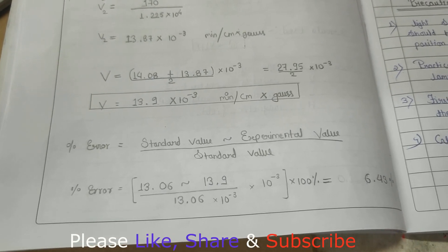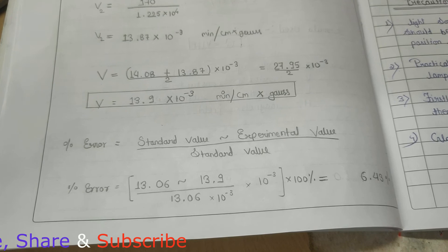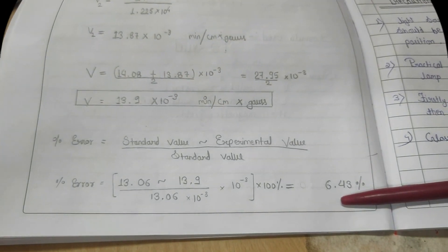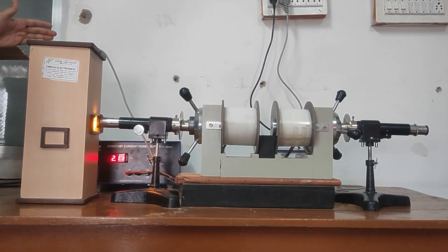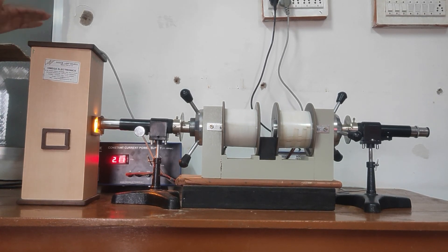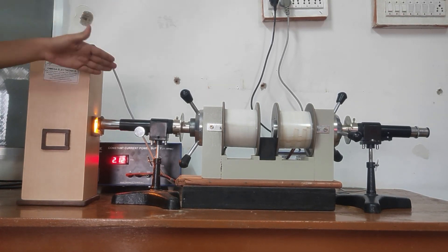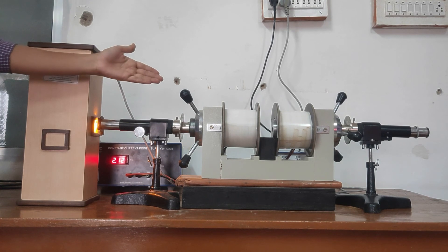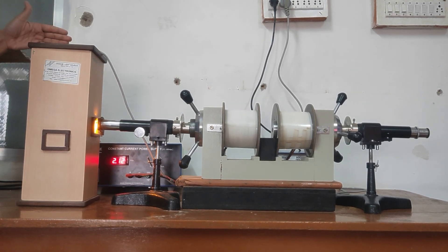In this case, we will take the percentage error. The percentage error is 6.43 percent. Now let's look at practical precautions. First of all, the arrangement is sodium lamp, polarizer, analyzer, electromagnet. This should be 180 degree angle, linear.